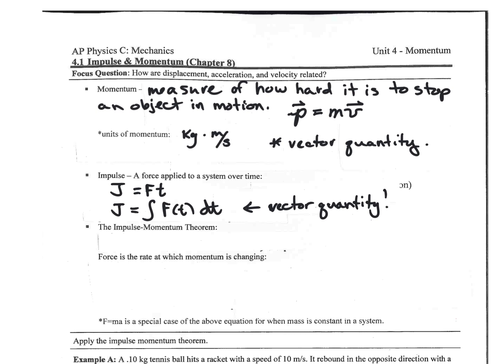Impulse involves very rapid changes — it's a force, a very rapid change in momentum. The impulse-momentum theorem states that an impulse causes a change in momentum. In other words, impulse J is equal to the change in momentum. The force is the rate at which the momentum is changing — that is, force equals dP/dt, where P is momentum.